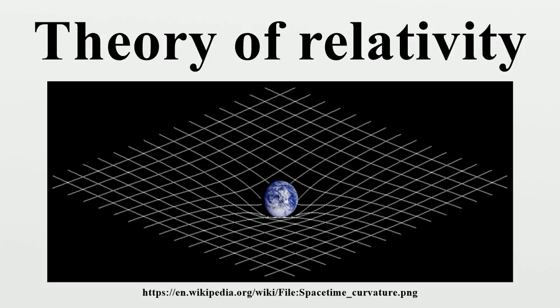General relativity is a theory of gravitation developed by Einstein in the years 1907 to 1915. The development of general relativity began with the equivalence principle, under which the states of accelerated motion and being at rest in a gravitational field are physically identical. The upshot of this is that free fall is inertial motion.